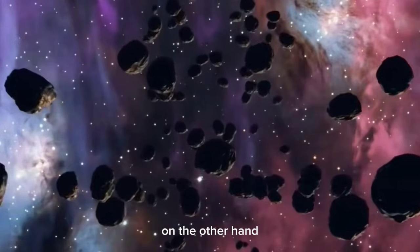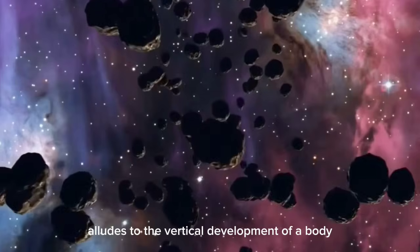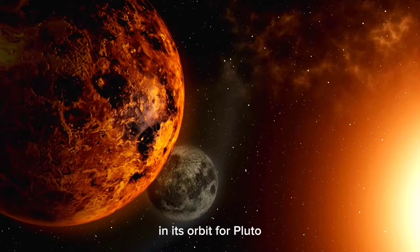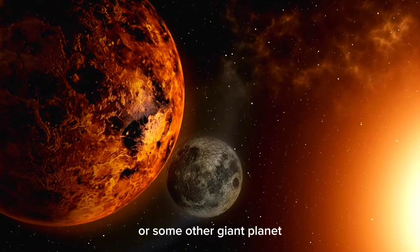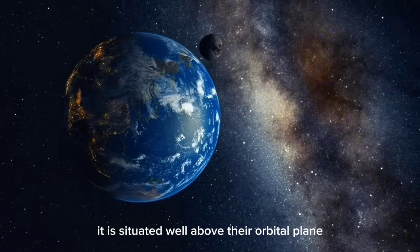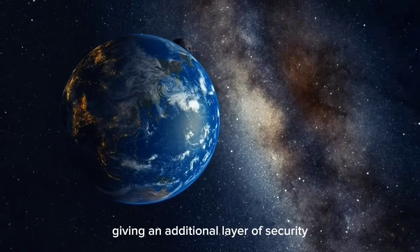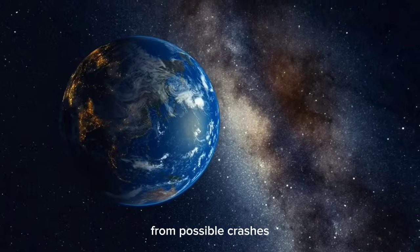Libration, on the other hand, alludes to the vertical development of a body in its orbit. For Pluto, this means that when it comes nearest to Neptune or some other giant planet, it is situated well above their orbital plane, giving an additional layer of security from possible crashes.